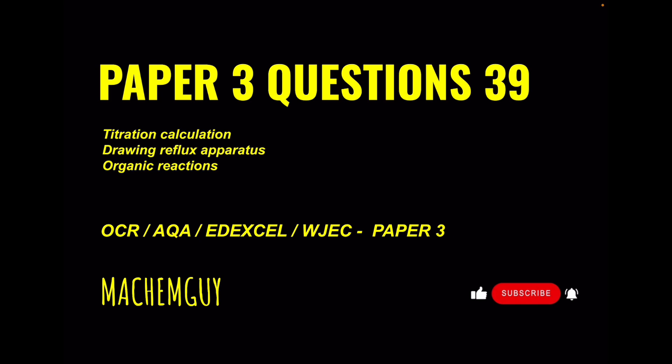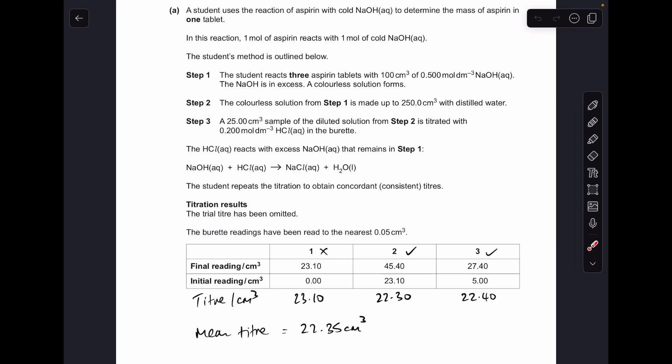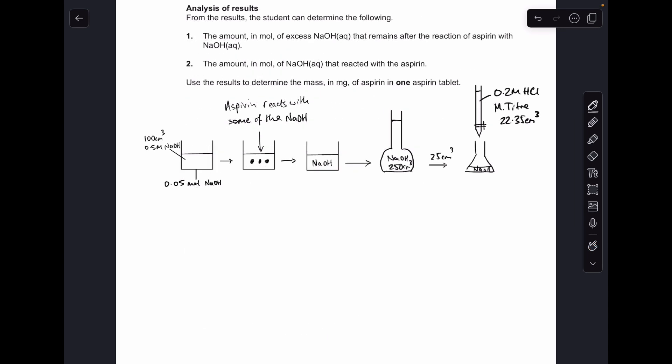Okay, so the first thing I need to do is calculate the three titres for the accurate titrations, the trial ones being left out. So 23.10 for the first one, 22.30 for the second one, 22.40 for the third one. We're looking for concordant results, so results that are within 0.1 cm³ of each other. You can see two and three are, that's why I've ticked them. So we take the mean of those two: the mean titre is 22.35 cm³.